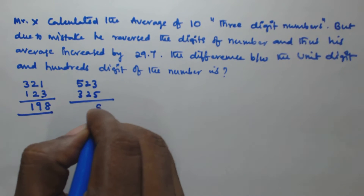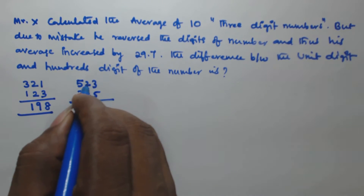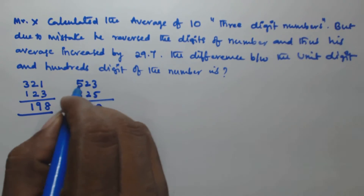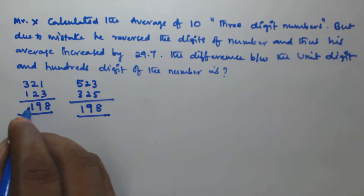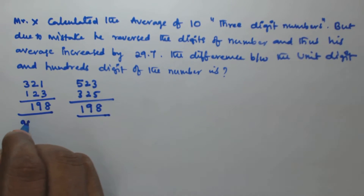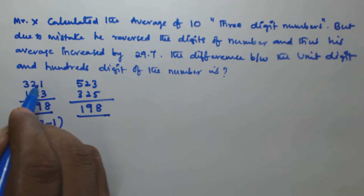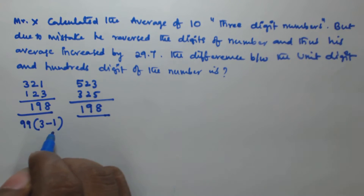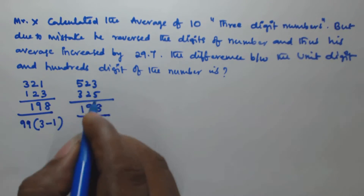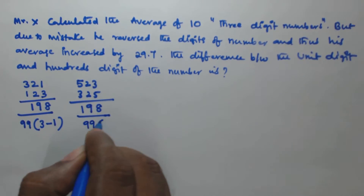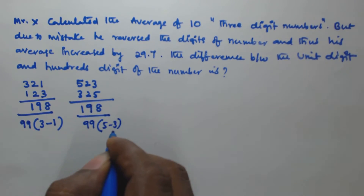Subtracting 523 minus 325 also gives 198. We can write this as 99 times (hundred digit minus unit digit). For 321: hundred digit is 3, unit digit is 1, so 99 × (3 − 1) = 99 × 2 = 198. For 523: 99 × (5 − 3) = 99 × 2 = 198.